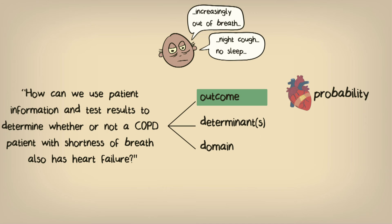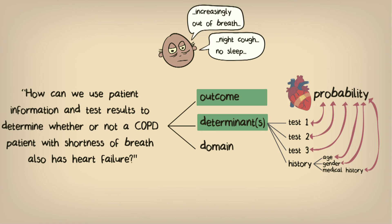Next, we have the determinants. In diagnostic research, there's typically more than one determinant. We want to know all of the relevant diagnostic tests that we could perform on our COPD patient to help determine whether they have heart failure. This also includes the patient history, because knowing the patient's age, gender, and medical history is almost certainly going to improve our ability to reach the correct diagnosis. Remember that because this research question is a diagnostic question, we're interested in a descriptive relationship between the diagnostic determinants and the outcome. Thus, causality does not play a role, and in turn, we don't need to worry about confounding in our study.